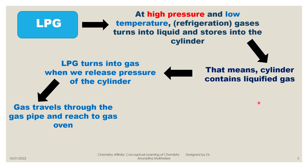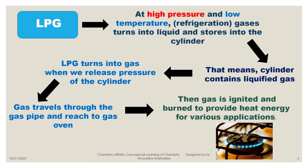When we open the knob on the cylinder, the liquid immediately converts into gas because it is released from the high pressure inside the cylinder to the atmospheric pressure. The gas then travels through the gas pipe and reaches the gas oven where we cook. If you ignite a matchstick there, a combustion reaction takes place in the presence of oxygen in the air, and we can see the fire — the heat energy which we use for cooking.